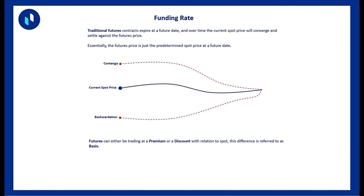To understand the funding rate, let's first go over how traditional futures contracts work. Traditional futures contracts expire at a future date — this is different from perpetual swaps, which as the word implies do not expire. In traditional futures contracts, over time the futures price is going to converge with the spot price and settle against it. The market can be in one of two conditions in terms of futures term structure: contango or backwardation.